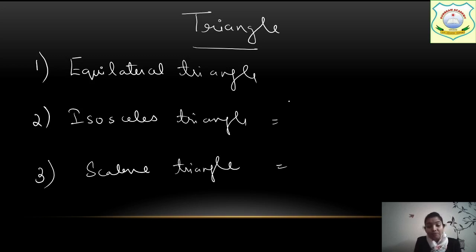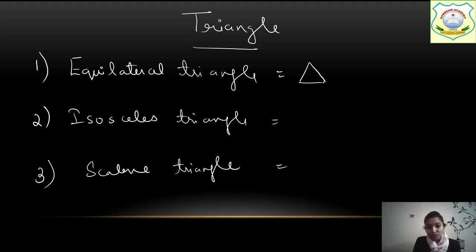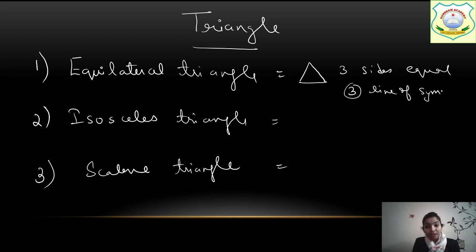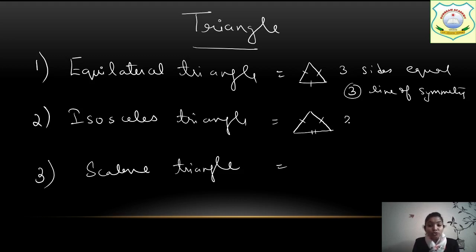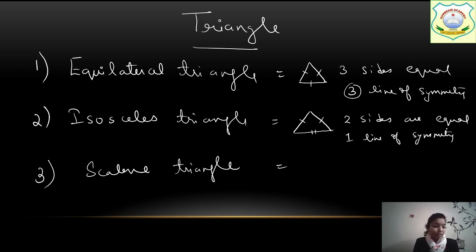Now how many lines of symmetry are there? Let's discuss. In an equilateral triangle, all 3 sides are equal. Since all 3 sides are equal, how many lines of symmetry will there be? 3. So there are 3 lines of symmetry in an equilateral triangle. In an isosceles triangle, 2 sides are equal and 1 is unequal. Here all 3 sides and 3 angles are equal for equilateral, while for isosceles, 2 sides and 2 angles are also equal.